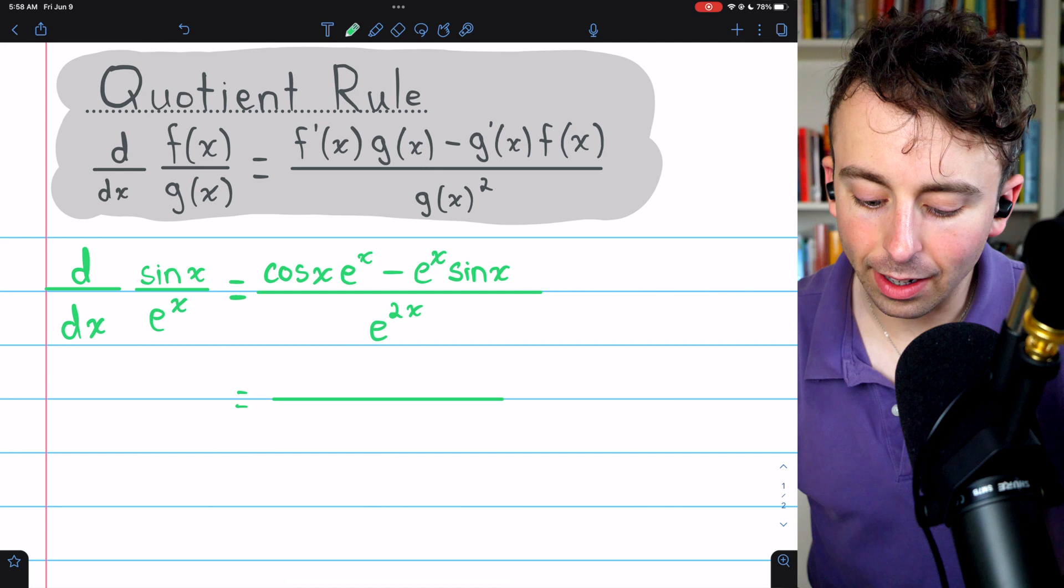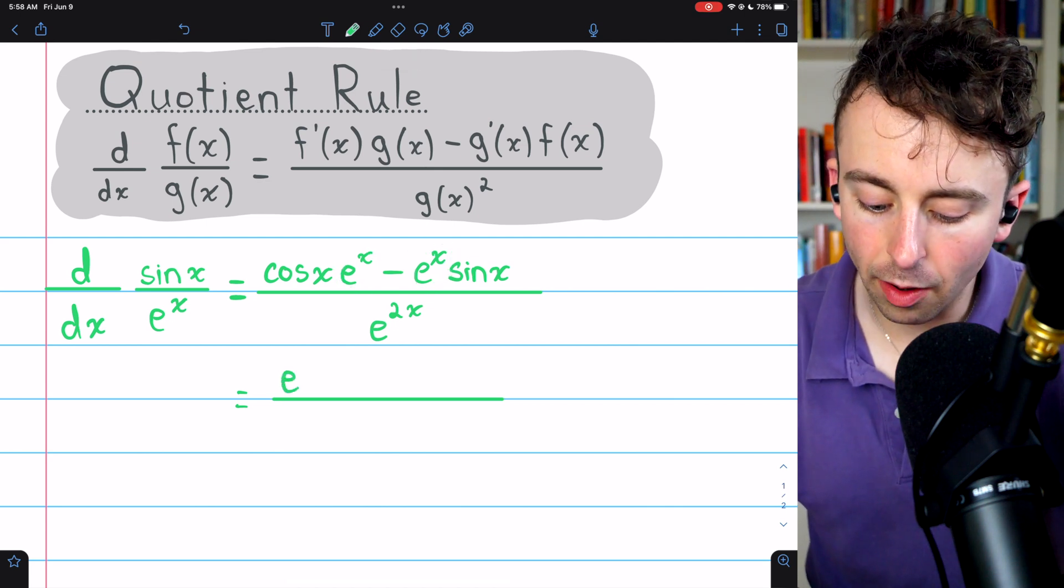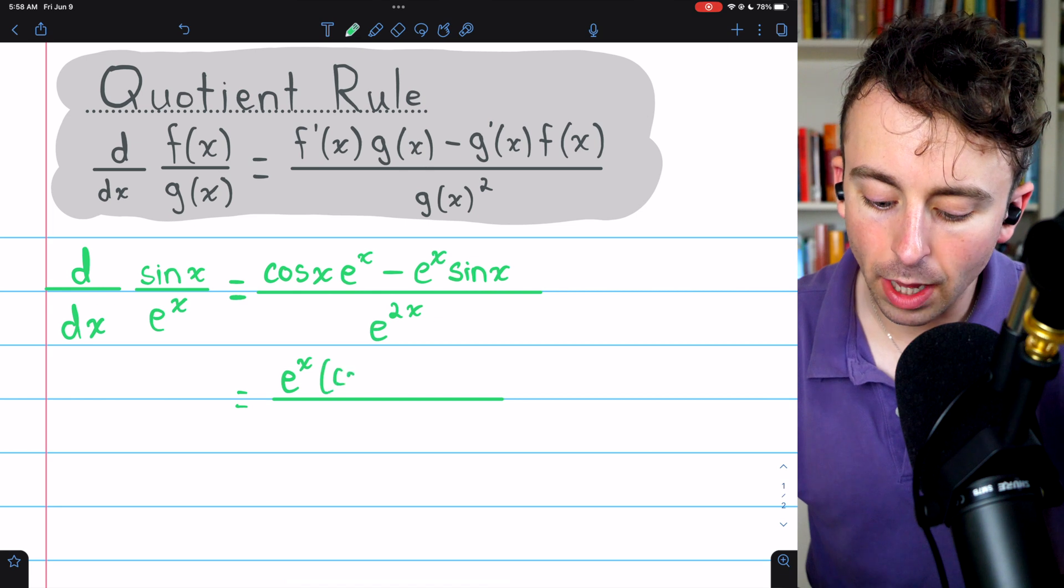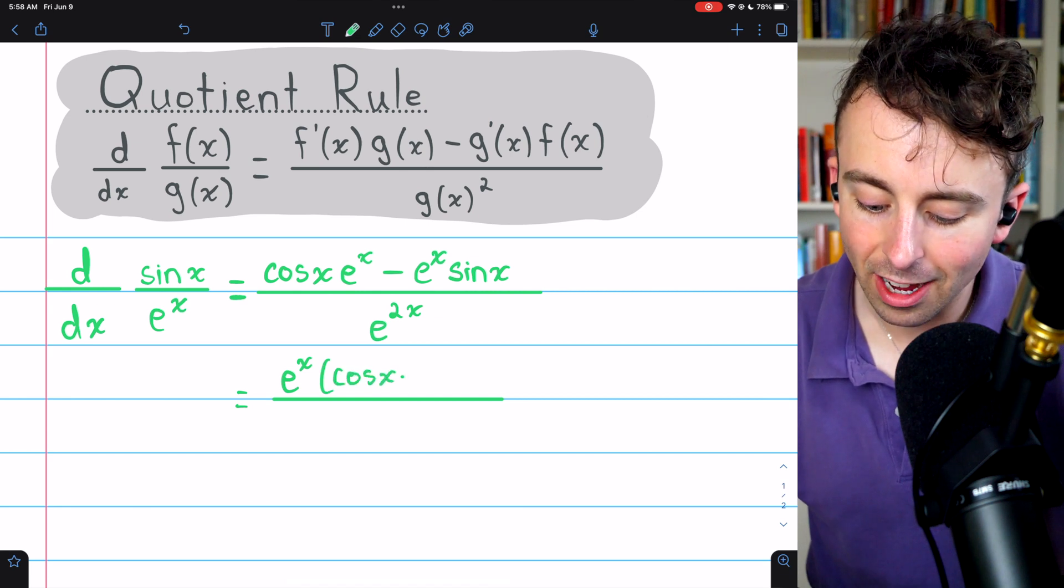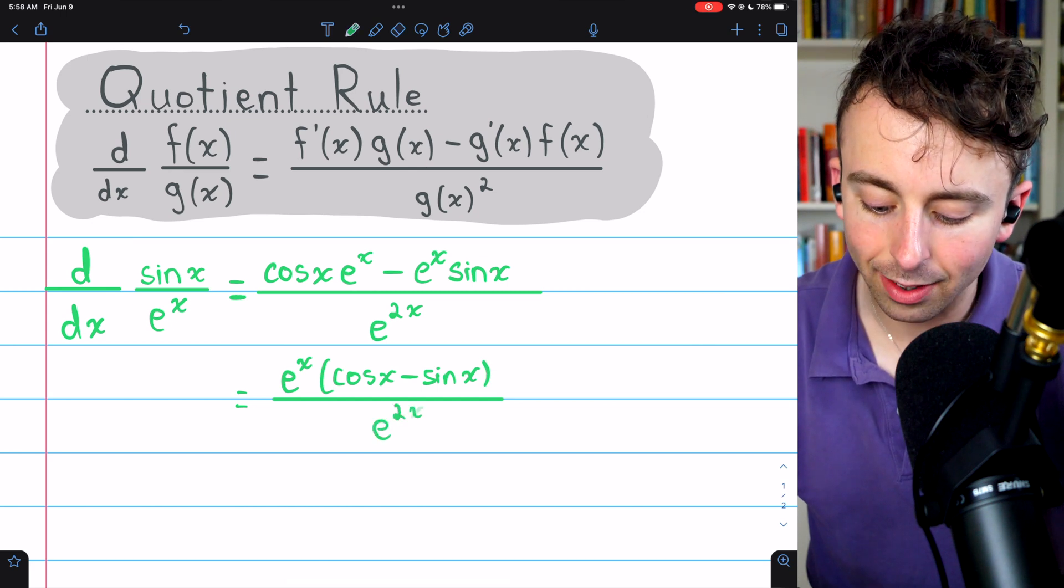Then we can factor an e to the x out of both terms in the numerator, giving us e to the x multiplied by cosine x minus sin x, all divided by e to the 2x.